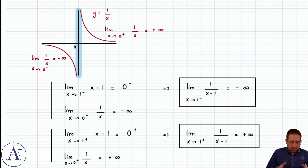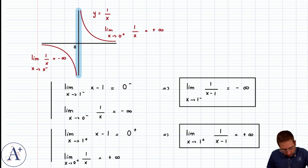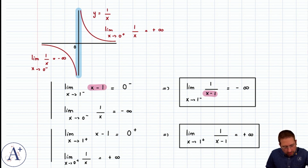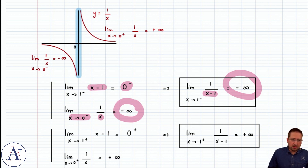This is composition of limits, and we'll talk about that in a separate video. You can think it through and realize: this is the denominator, and it goes to 0 minus. If the denominator goes to 0 minus, then the limit is minus infinity — and that's what we get. The same applies as x approaches 1 from the right.